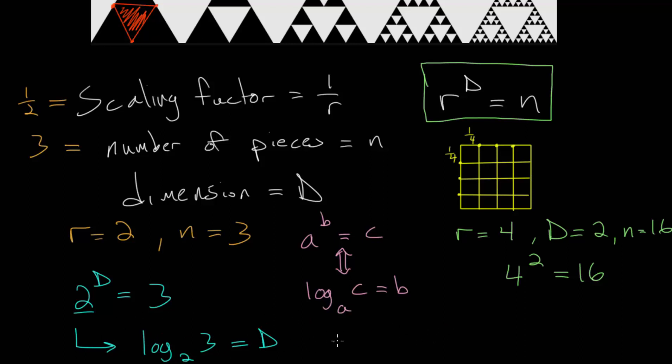To put this into a calculator, we would have to use the change of base rule. So we can either change this to a common log, which has base 10, or a natural log, which has base e. I'll write both just so that we can see it. We can use log base 10 of 3 divided by log base 10 of 2.